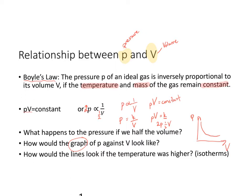If I changed the temperature to a higher temperature, then the line will shift up. Because a higher temperature means much more movement and kinetic energy, more collisions, which increases pressure. So you'd expect them to occupy more volume and at a higher pressure. These are called isotherms — the same shape of line but shifted higher at a higher temperature.